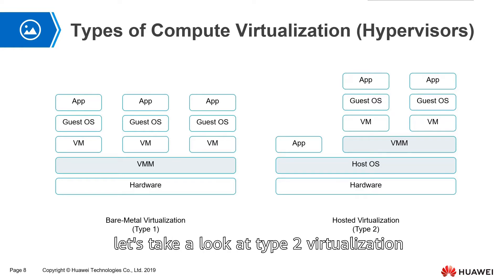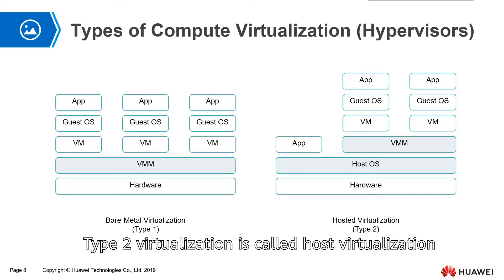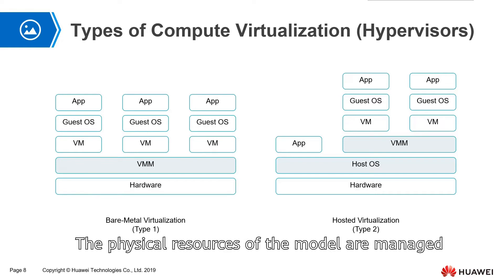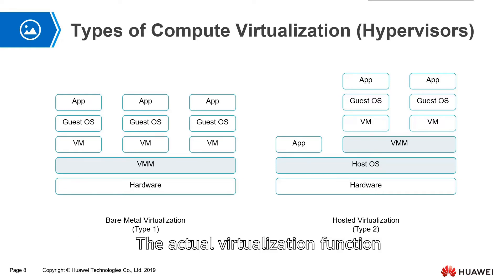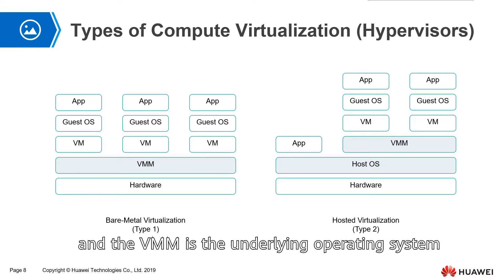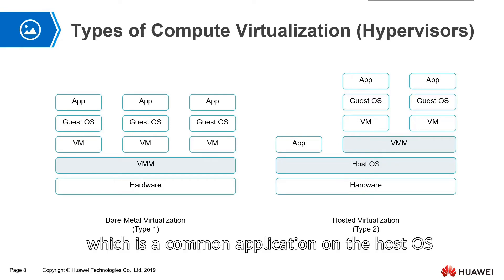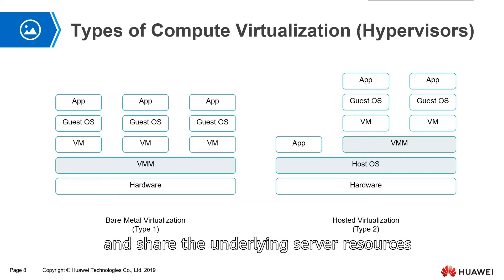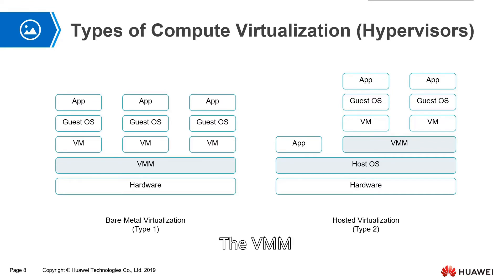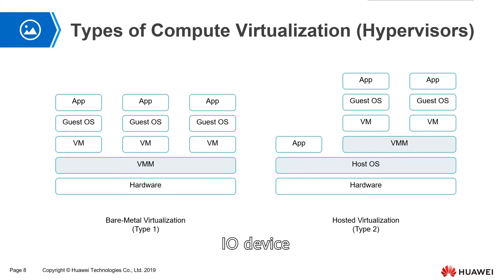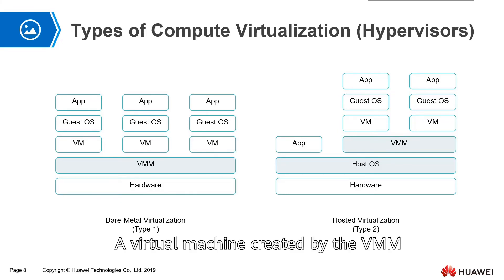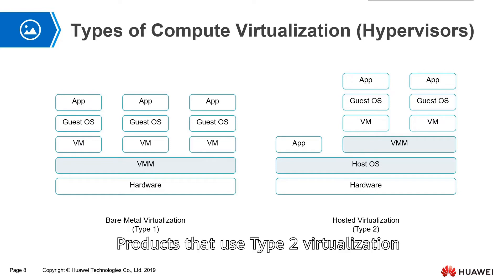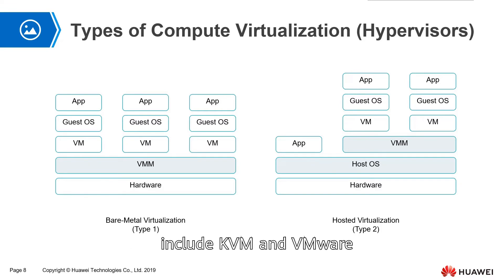After talking about type 1 virtualization, let's look at type 2 virtualization, which is called host virtualization. The physical resources are managed by the host OS, and the actual virtualization function is provided by the VMM. The VMM runs as a common application on the host OS. Virtual machines are created through the VMM, which shares the underlying service resources. The VMM obtains resources by calling the host OS to implement virtualization of the CPU, memory, and I/O devices. Virtual machines created by the VMM typically participate in scheduling as a process of the host OS. Products using type 2 virtualization include KVM and VMware.